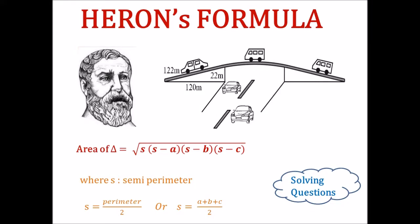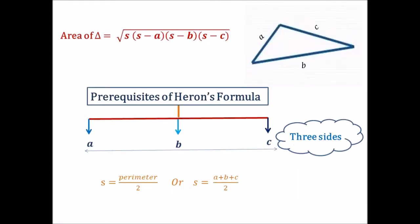Hello, dear students. In this video, we will apply Heron's formula to solve a question in which the situation is quite familiar to us. The prerequisites to find the area of a triangle using Heron's formula are the measurements of the three sides, and using these measurements we find out the semi-perimeter of the triangle.